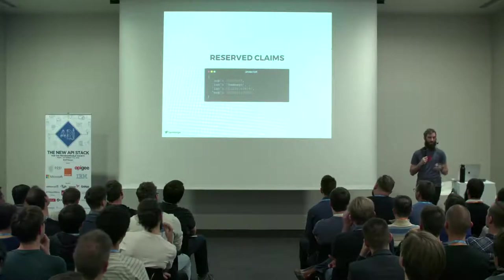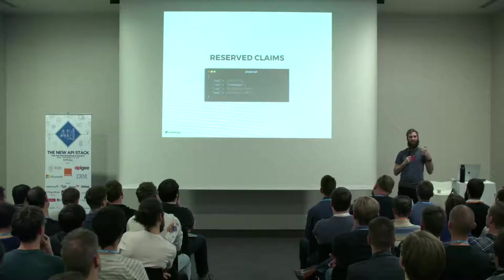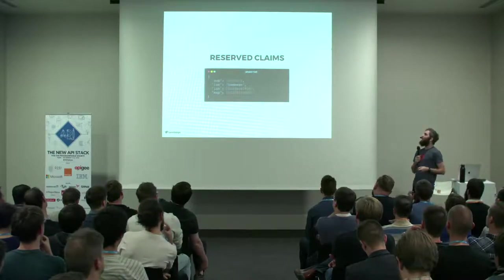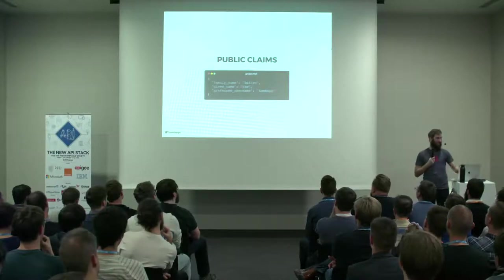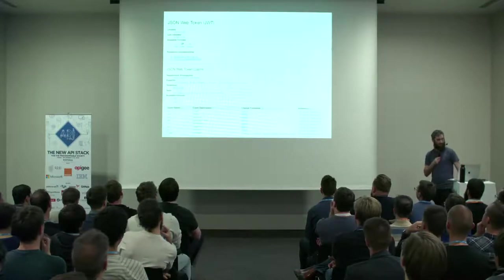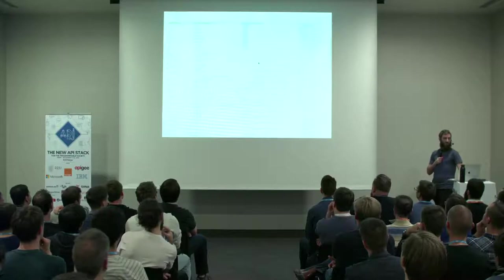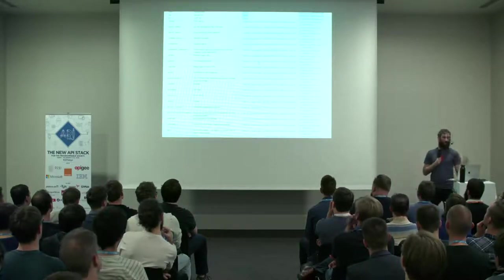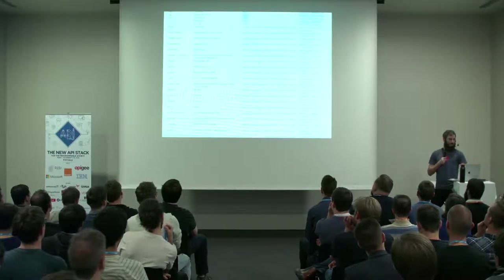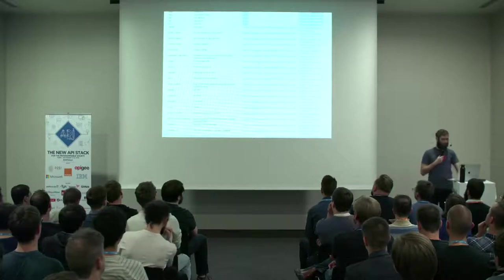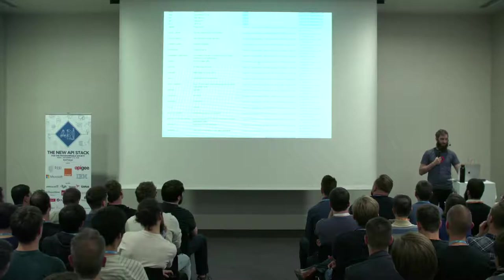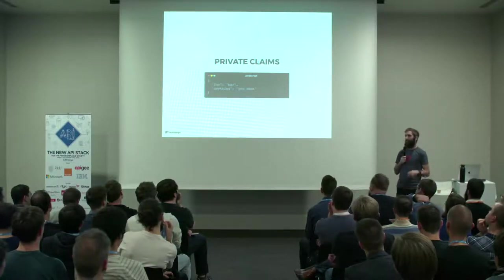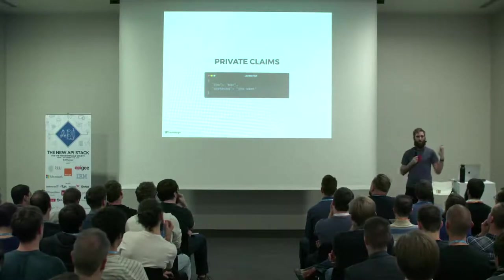There are a few different types of claims. First, you have reserved claims — specified in the JWT specification — like the subject, the issuer, the issued-at date, or the expiry date. Then you have public claims, which is a list of claims defined by the IANA, basically a list of claims they encourage you to use so all APIs work the same way. For example, if you want to send back a first name, you use 'given_name' instead of 'first_name' — it's a convention, but if everybody does this, all tokens can be a little more universal. And lastly, you have private claims, which can be any valid JSON you want — an array, a string, a number, a boolean — whatever you want.